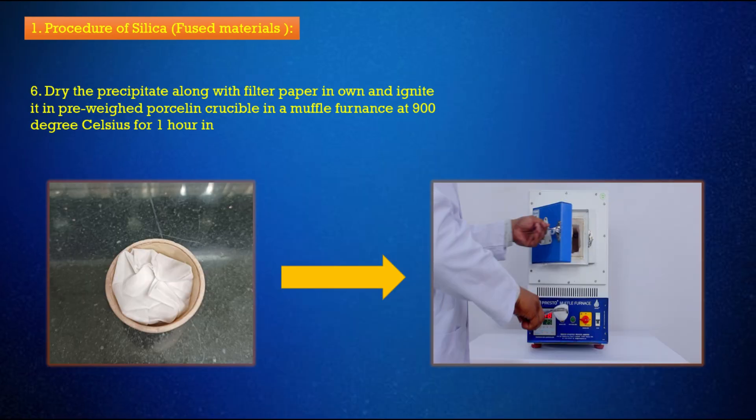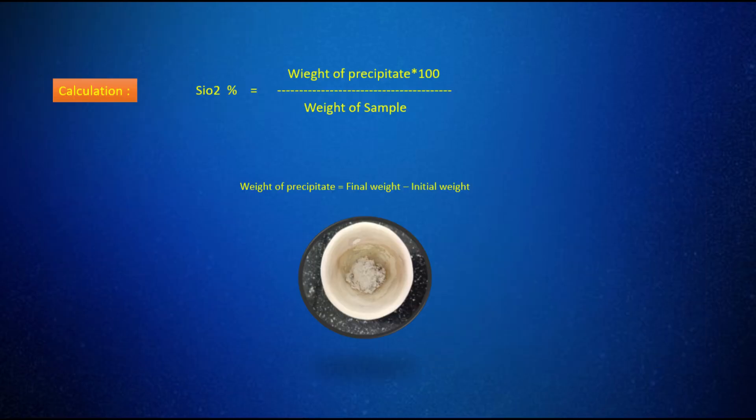Step 6: Dry the precipitate along with the filter paper in a muffle furnace and ignite it in a pre-weighed porcelain crucible in a muffle furnace at 900 degrees Celsius for 1 hour. Step 7 - Calculation: Silica (%) = (weight of precipitate / weight of sample) × 100. Weight of precipitate = final weight minus initial weight.